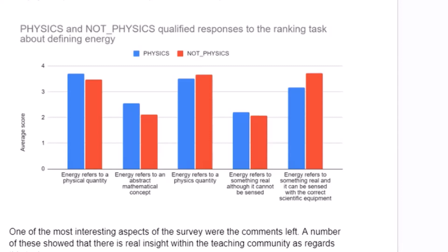The two statements either side of it — 'energy refers to a physical quantity' and 'energy refers to a physics quantity' — were directly aimed at the definitions in the standards. We didn't really think it was very clear whether we were talking about physical domains or just the fact that it was a physics thing. What was good is we all seem to agree that 'energy refers to something real, although it cannot be sensed' is the worst answer, and everybody seems quite happy with that.